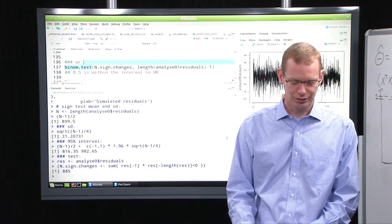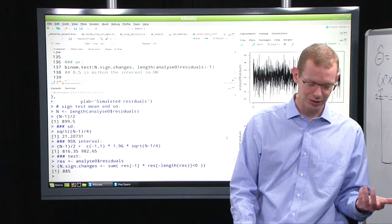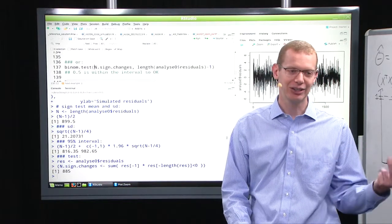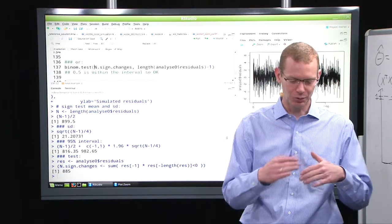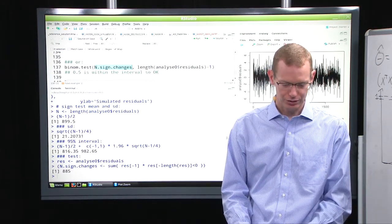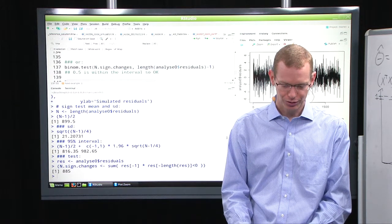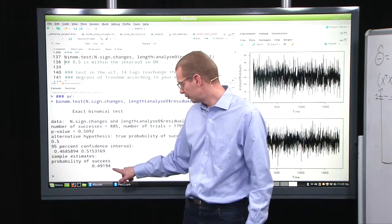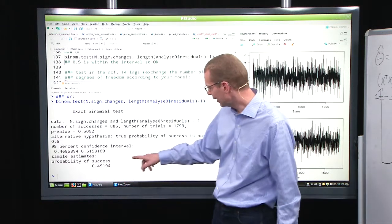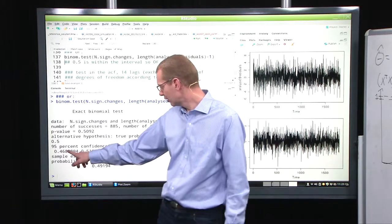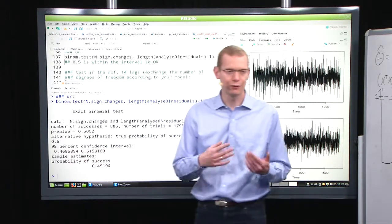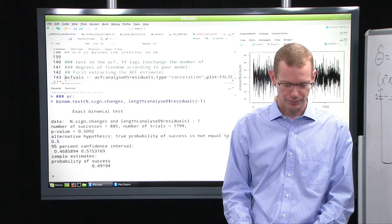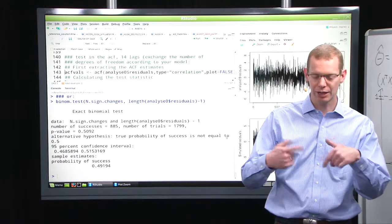Rather than doing your confidence interval yourself by doing normal approximation, you can also use the binomial.test function to do it in the appropriate binomial distribution. In this case, the number of observation is so large that the normal approximation is very, very good. Again, you need the number of sign changes and you need the number of potential changes here. And all we get is that we got a probability of success of 0.49. That's just dividing the two numbers. And then we get a 95% confidence interval for that. And that includes 0.5. And thus, we cannot reject that they are independent by this measure.